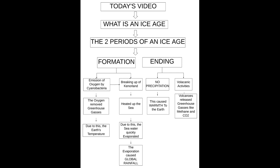To recap: ice ages are periods of lower temperatures on Earth, composed of glaciation periods and interglaciation periods. The oxygen released by cyanobacteria removed greenhouse gases and cooled the planet, while the splitting of Kenorland heated up the seabed, causing evaporation and global rainfall. Together, these factors caused the Huronian Ice Age. The lack of precipitation and volcanic eruptions then raised Earth's temperature, ending the first ever ice age.